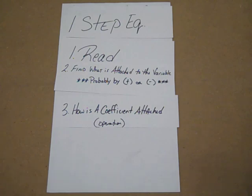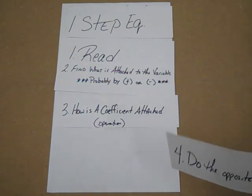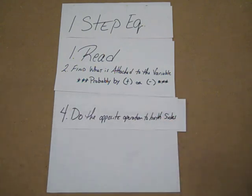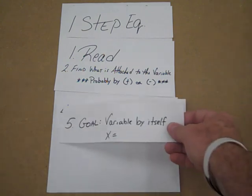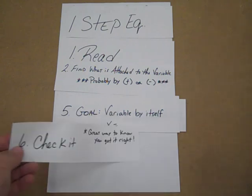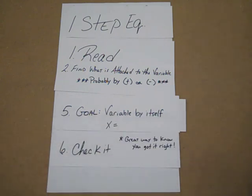Three: how is the coefficient attached — what's that operation? Again, it's probably going to be addition and subtraction. Four: do the opposite operations to both sides. And five — the goal — this is where we get our variable all by itself. Our last step, which is optional, is just to check it. So those are things that you can think about when you do one-step equations.